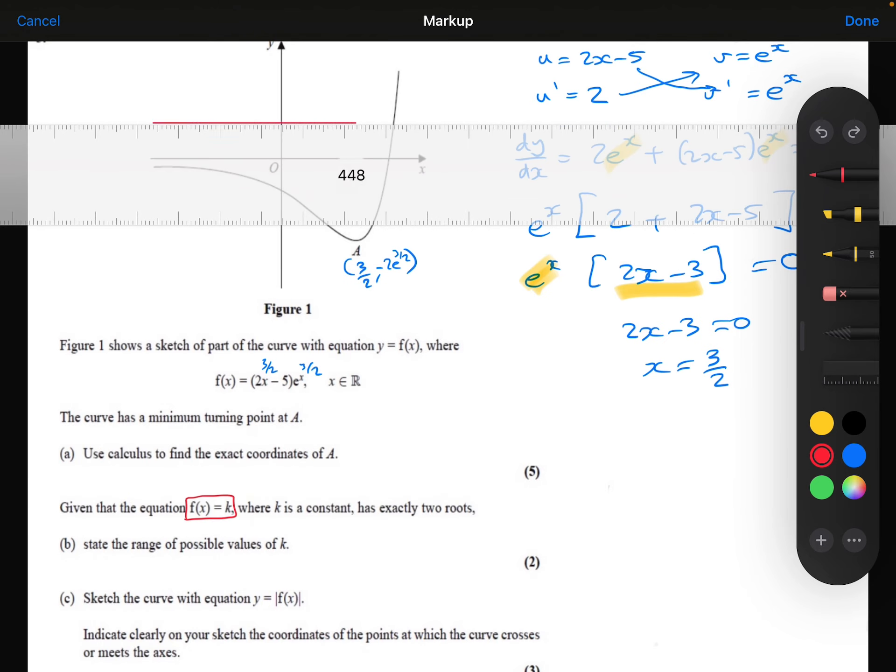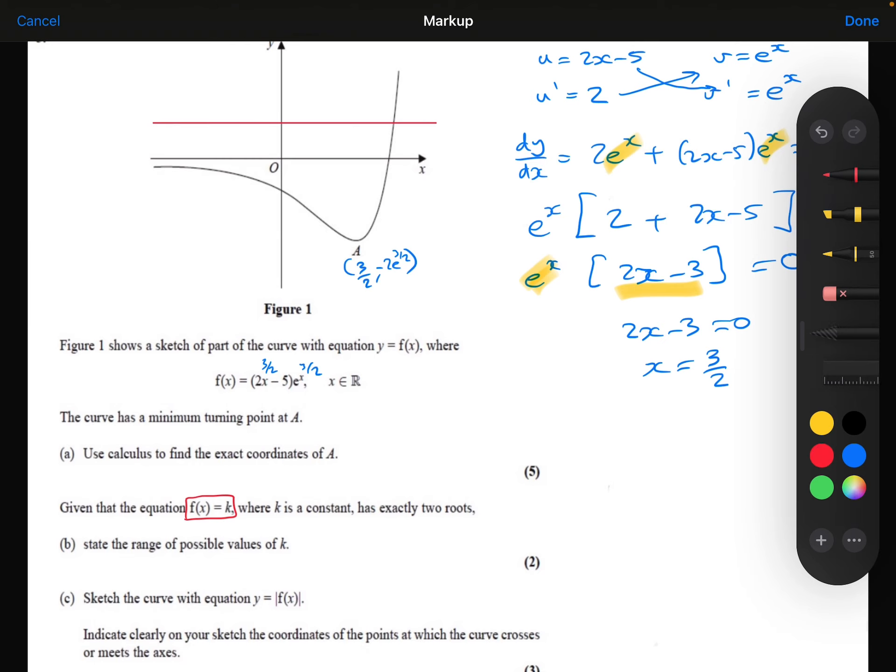For example, it could be y equals 2 or y equals 3. It's going to look something like that. But the way I've drawn it there, there would only be one solution. We were told it has exactly two roots. So where can I draw this horizontal line, this y equals k, where it intersects with the f of x function twice?